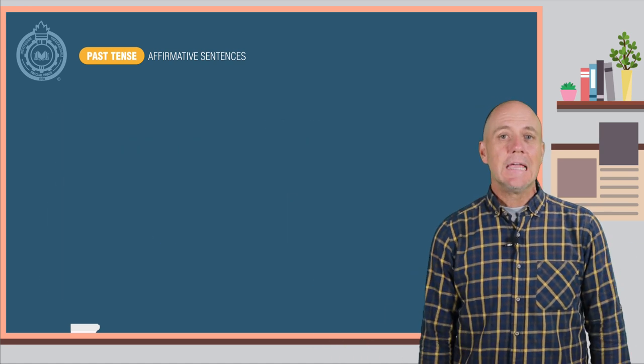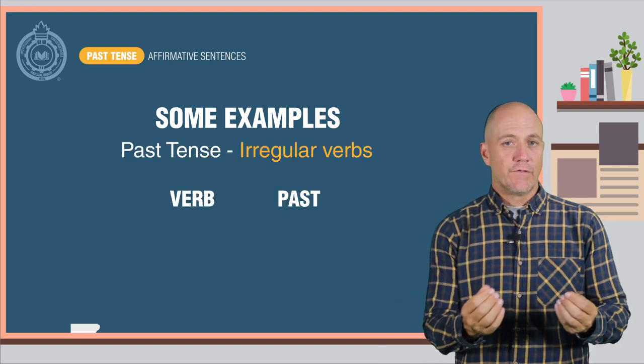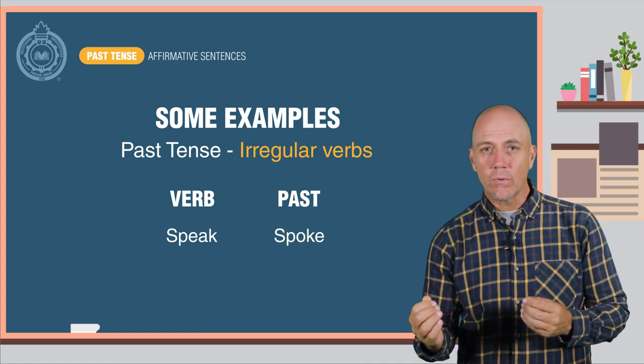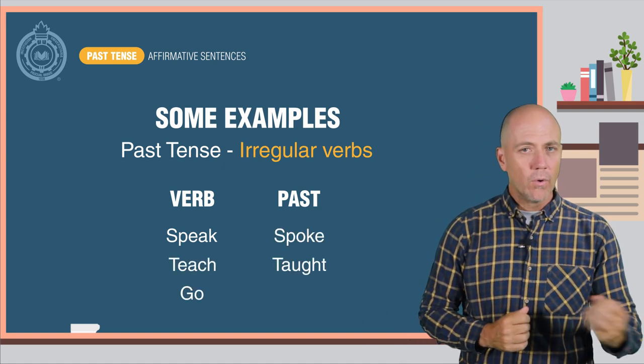Sorry! Here are some examples of the past tense with irregular verbs. The verb speak is spoke, teach, taught, go, went.